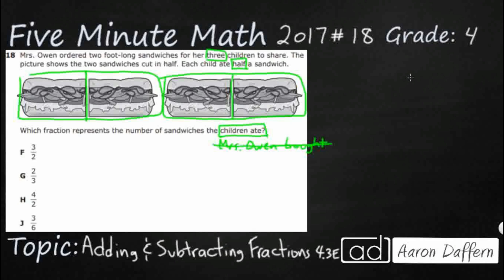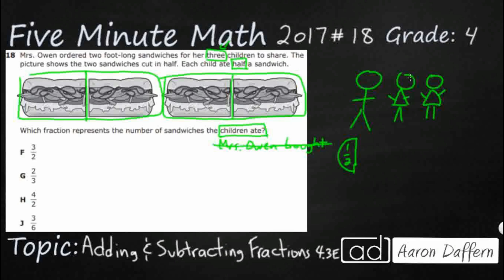I see that I've got three children, so let's draw three children — a boy and two girls. What are they going to eat? I'm not going to try to draw those sandwiches because those are very complex drawings. What I am going to do is draw a half a circle for each to represent their half. The boy and the first girl eat that first sandwich together, and then the second girl eats the first half of that second sandwich.